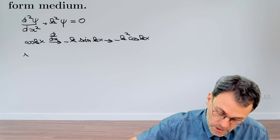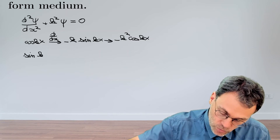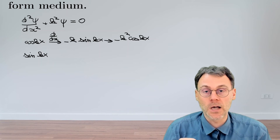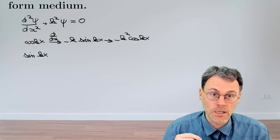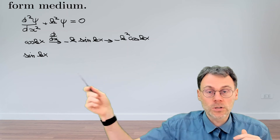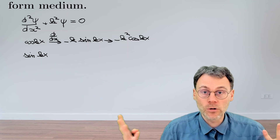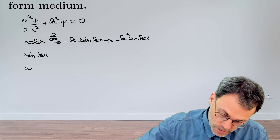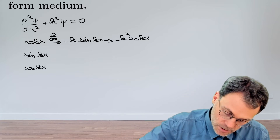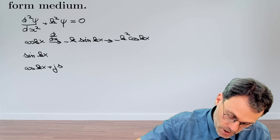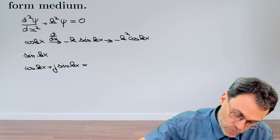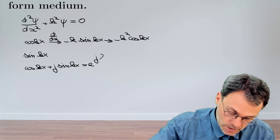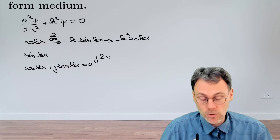For the very same reason, sine of kx is also a solution — if you take the derivative twice you end up back with a sine and pick up minus k squared. So these are two solutions, and obviously any linear combination of these two will also be a solution. In particular, we can look at cosine kx plus j sine kx, and Euler tells us that this equals exponential j kx, which is also a solution.